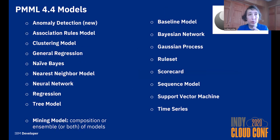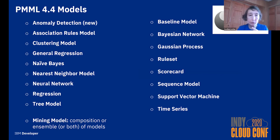In PMML 4.4 there are 17 kinds of models, plus the MiningModel element which describes ways to create multiple model compositions, model ensembles, or any combination of those.